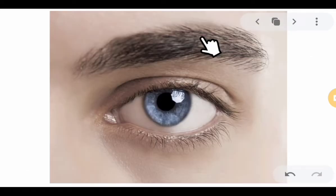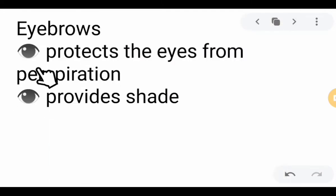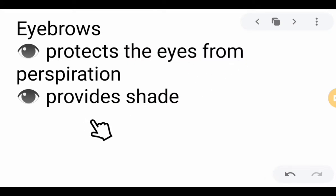I have here the outer part of the eye first. We have here the eyebrows — it protects the eyes from perspiration and it also provides shade. That is why it is not advisable to shave your eyebrows, because if your sweat is acidic, it will damage your eye.